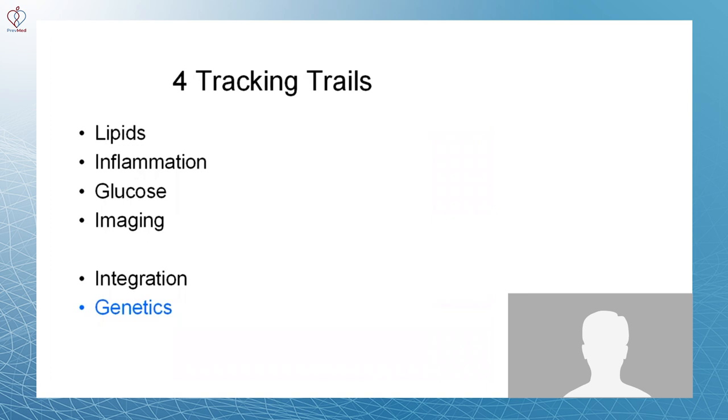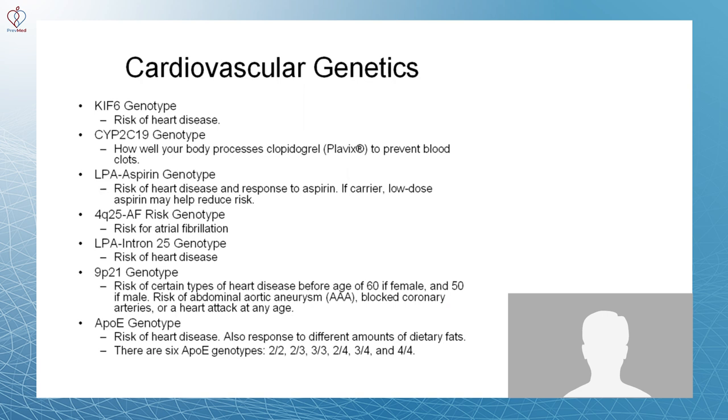The last piece of the puzzle here is the genetics. I've gone so far as to identify the seven genotypes that are relevant to cardiovascular disease. And here they are. My plan is to investigate this further, see where the testing is done, see how reliable the testing is, which it seems to be, and have one done.